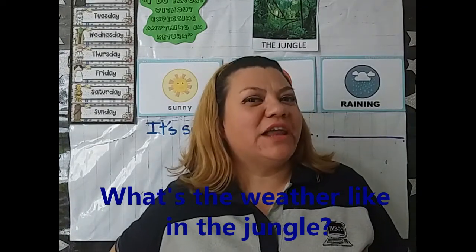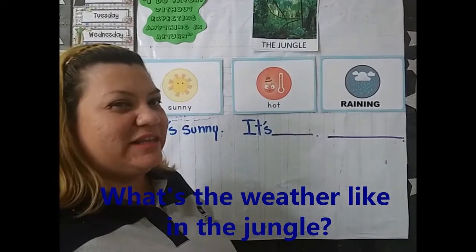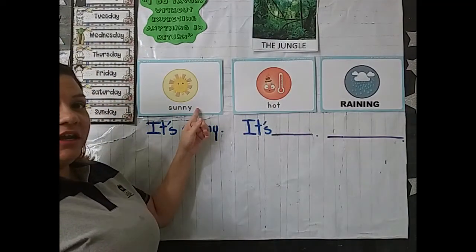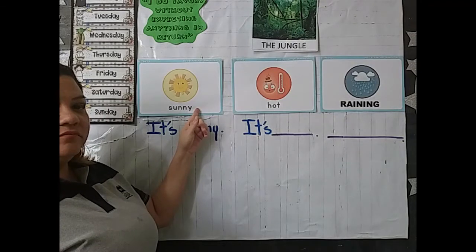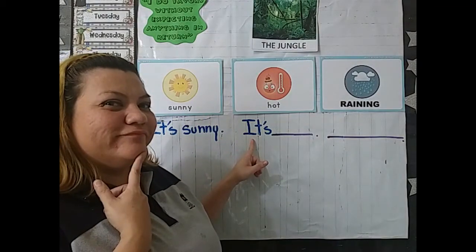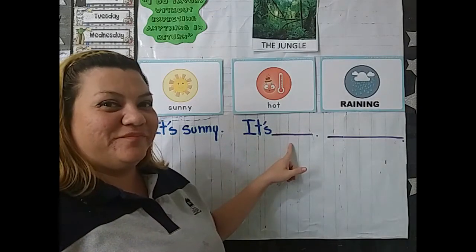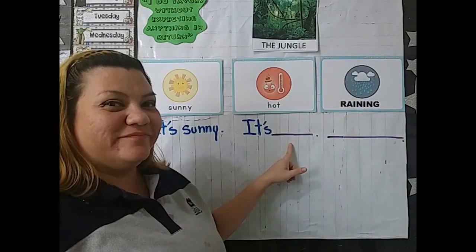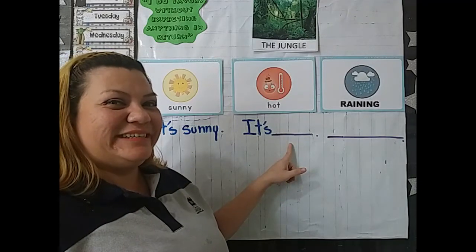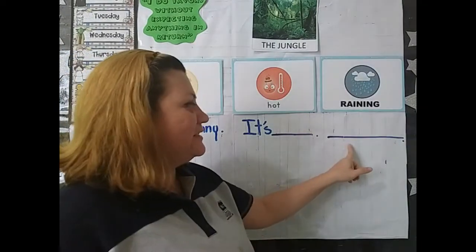What's the weather like in the jungle? We have the example: It's sunny, it's... what is the word here? You're right! Now you do this sentence.